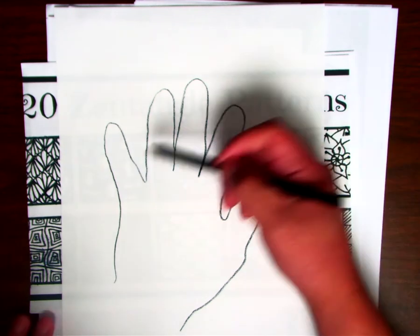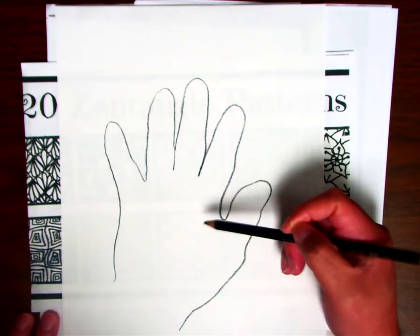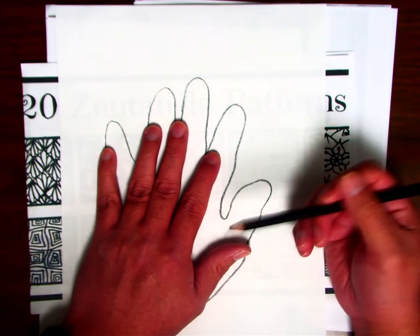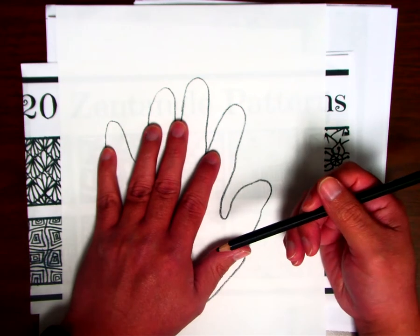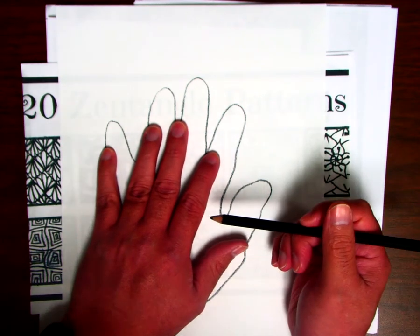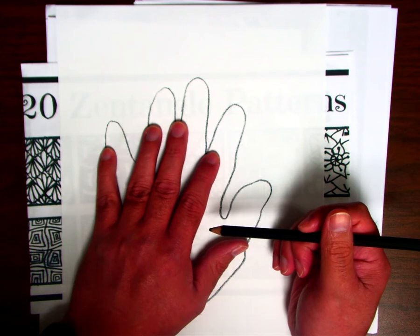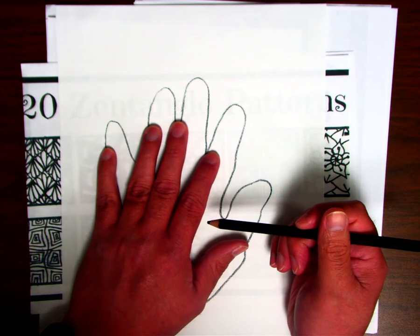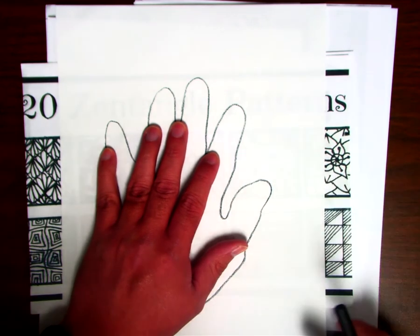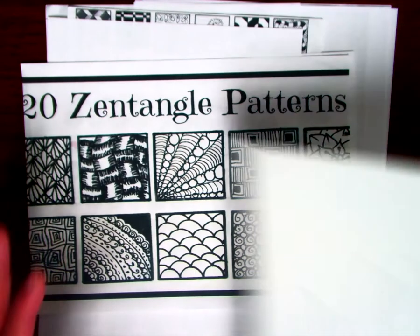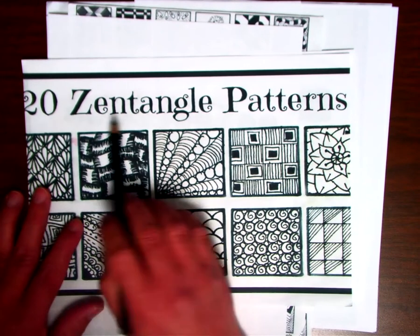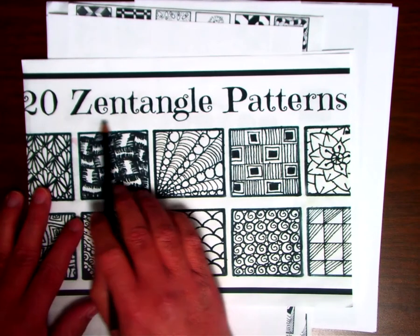Then, inside of your hand, you're not going to color it like normal. You're only going to use the color black, and you're going to use something called a zentangle pattern. So this is the word I would like you to look up: Z-E-N-T-A-N-G-L-E.